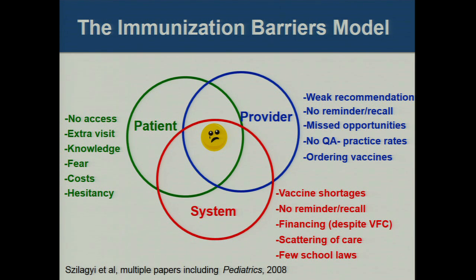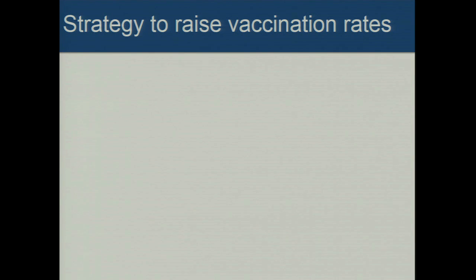From the patient perspective: some patients lack access to primary care, some vaccines like flu require an extra visit, there's lack of knowledge, fear of vaccines, cost barriers, and hesitancy. But the real problems we found were at the provider and system level. Providers were giving weak recommendations — not intentionally, but just weak. Providers didn't have reminder recall systems, were missing opportunities, and lacked quality improvement capabilities. System problems included some shortages especially for flu vaccine, financing problems, scattering of care, and school laws covering very few vaccines.